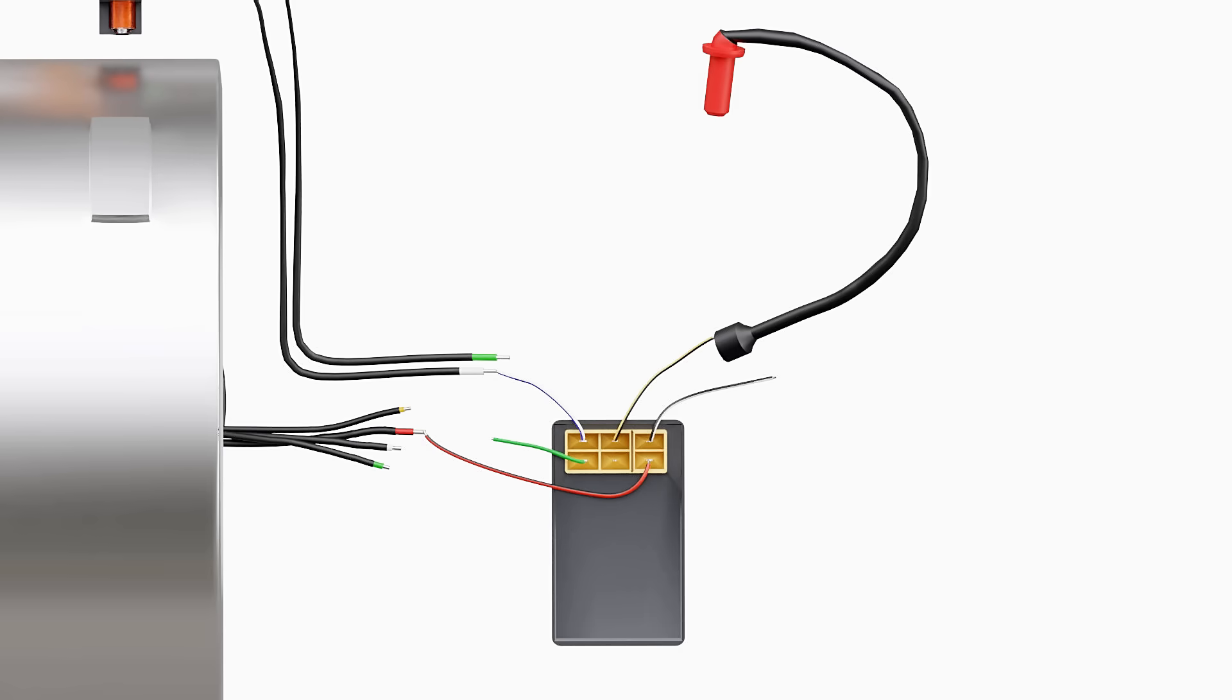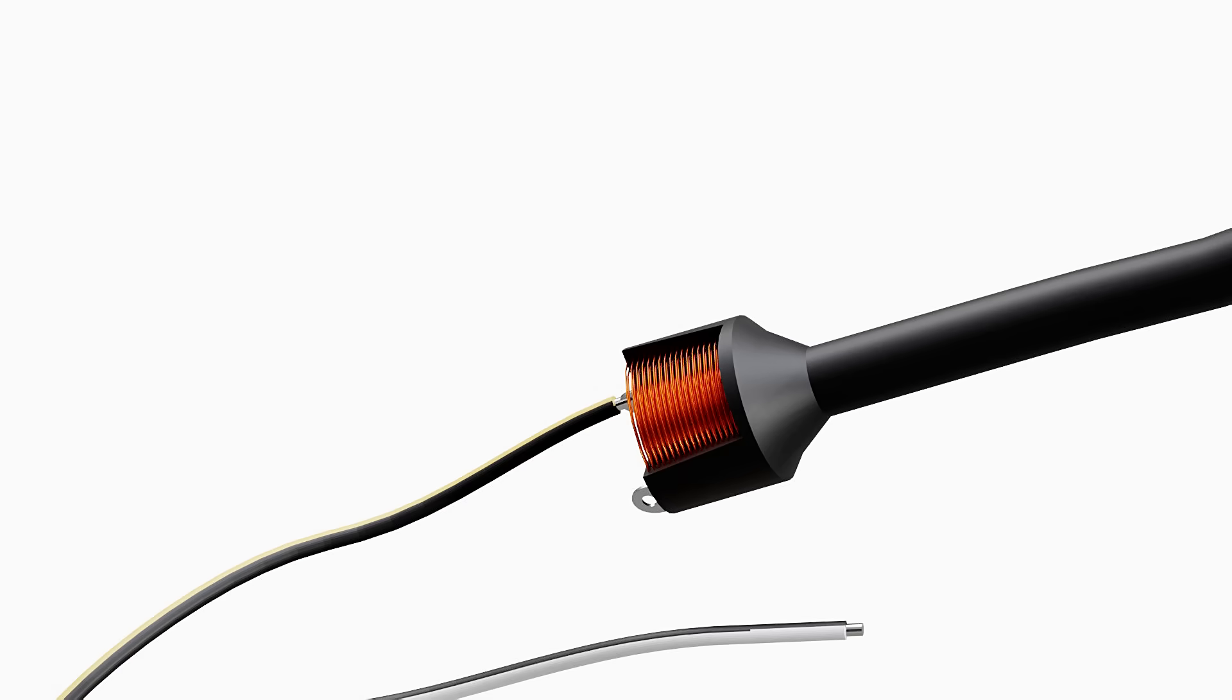To increase the voltage further, an ignition coil is used. The ignition coil is a step-up transformer which increases voltage up to 200 times the input voltage, which is sufficient to fire the spark plug.